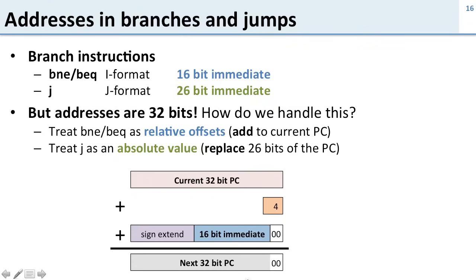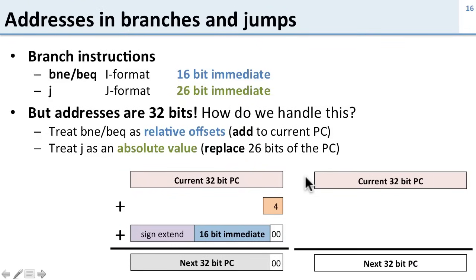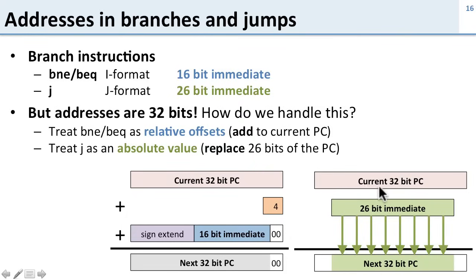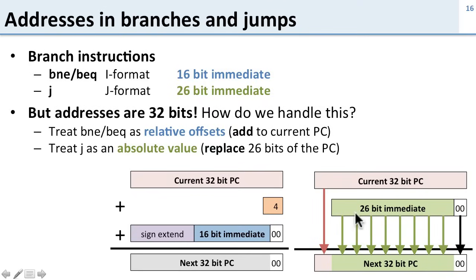The jump instruction works differently — we treat it as an absolute value by replacing bits in the current PC. We take the current 32-bit program counter, take the 26-bit immediate, and replace the corresponding bits in the middle of the PC with it. The top bits are carried down from the current PC and the bottom two bits are always zero because instructions are word-aligned.